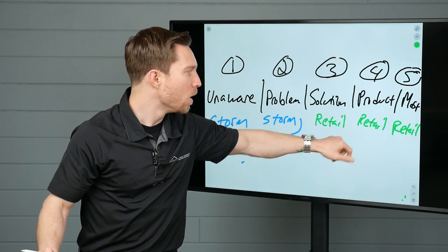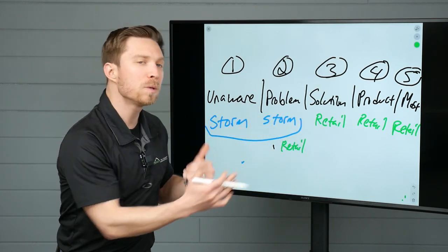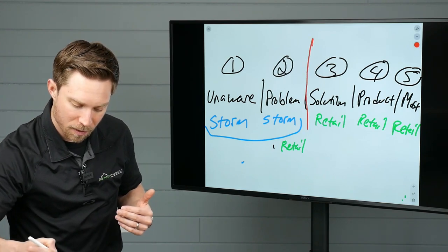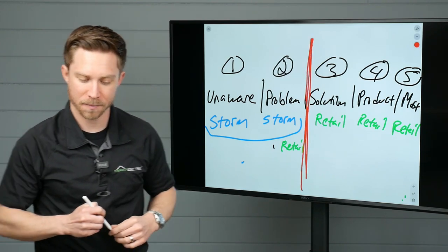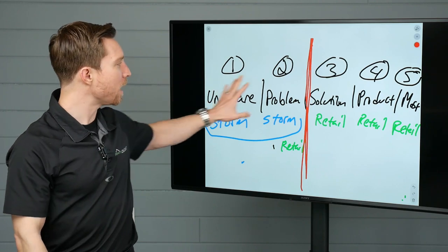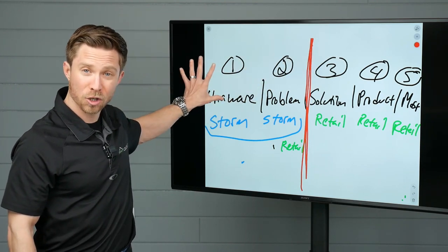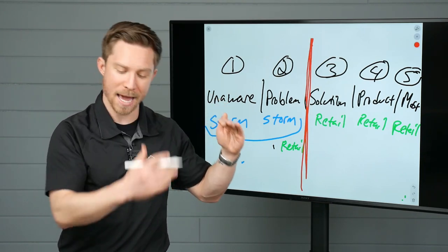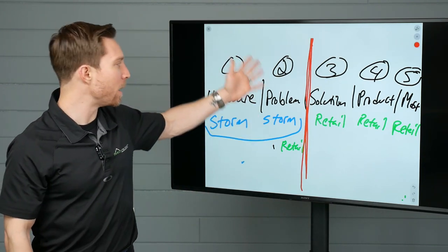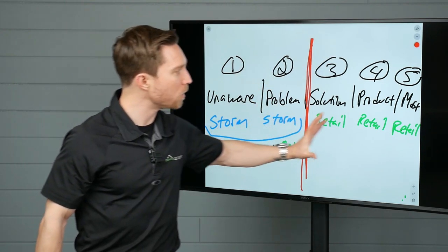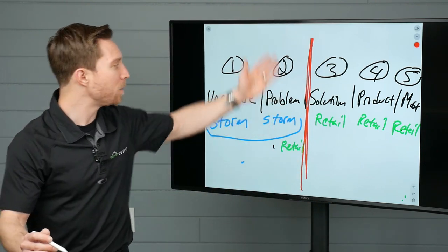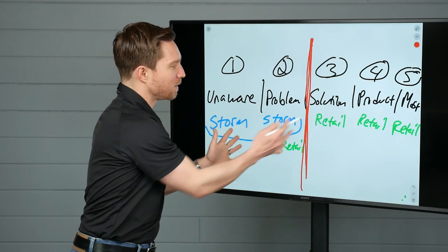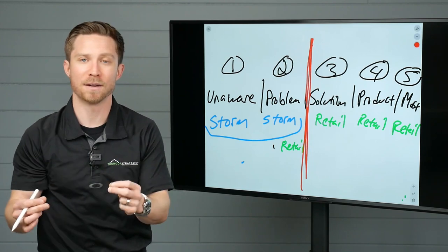So you'll notice there is truly a divide between storm and retail, and that divide is right here, meaning majority of the storm damage claims fall into a category where we are facing an uphill battle, where they are unaware or barely know of the problem, but they don't know much else. On retail, people know the solution. They know your product. They're very aware. They've hand-selected you. The skill sets to sell each of these is very different.